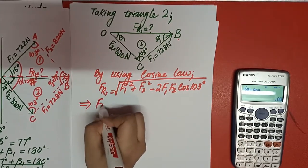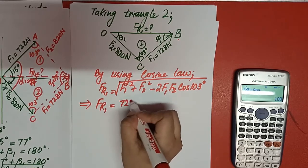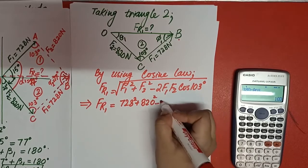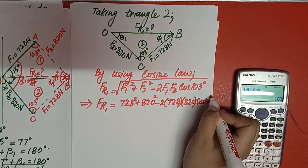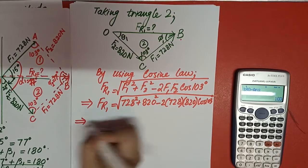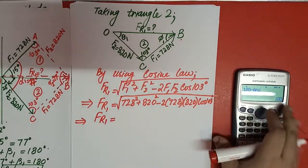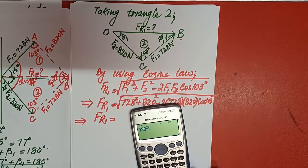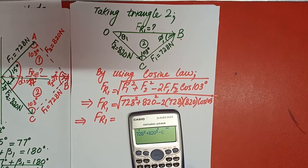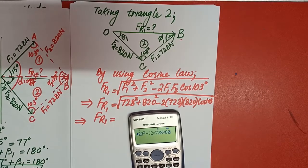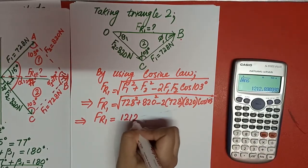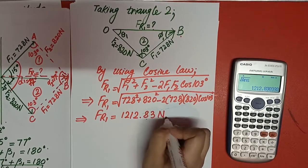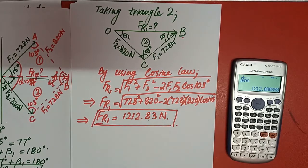FR1 equals square root of (728² + 820² − 2 × 728 × 820 × cos(103°)). The answer comes out to be 1212.83 Newton. We have found FR1.